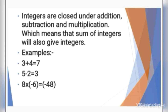Here we have some examples. 3 plus 4 equals 7. Here, 3 and 4 are positive integers, and the answer is 7. 7 is also a positive integer, so the sum of integers will also give an integer.